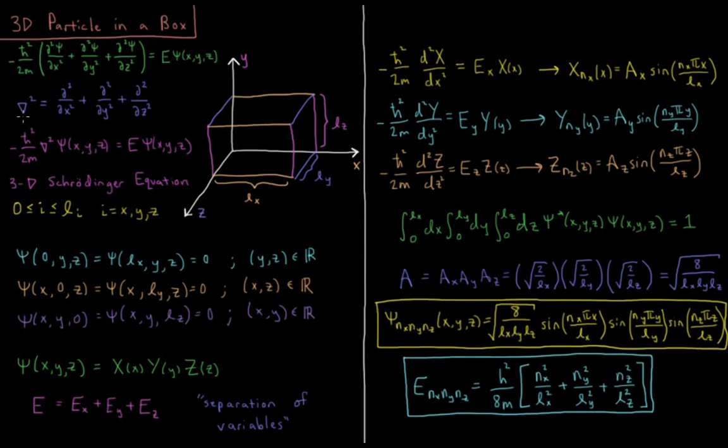or the Laplacian operator, which is a shorthand for second derivative with respect to each spatial dimension. So x, y, and z adding them together. So minus h-bar squared over 2m del squared psi equals e psi is our 3D Schrodinger equation.